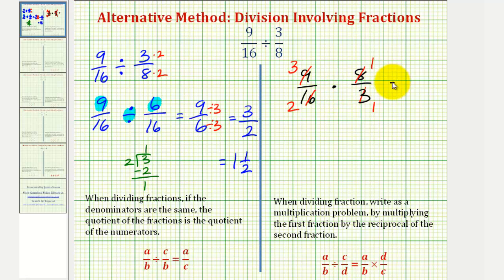And now we can find the product. 1 times 3 is 3, and 2 times 1 is 2, which of course is equivalent to 1 and 1/2. So of course our quotients are the same. So it's up for you to decide which method works best for you.